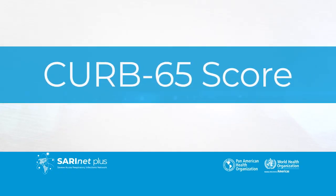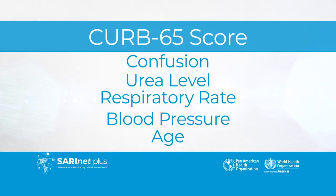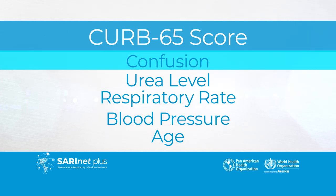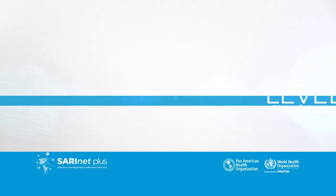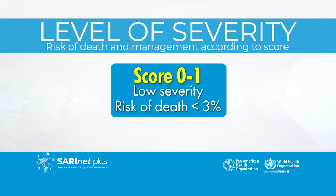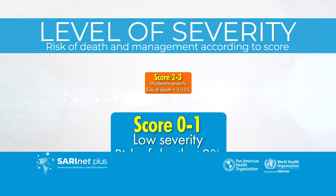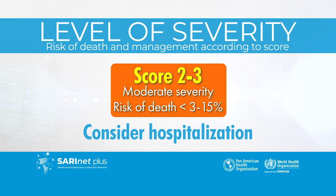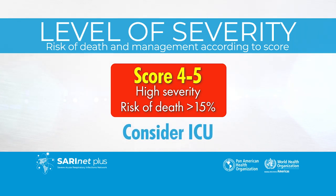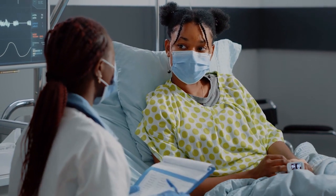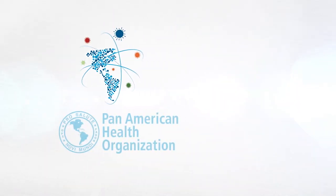In adults, the CURB-65 score is a validated tool that, when combined with clinical judgment, can be used to predict mortality and aid in determining admission for adult patients with pneumonia. It considers five simple variables easily available: confusion, urea level, respiratory rate, blood pressure, and age. A score of 0 to 1 predicts low risk and suggests considering home-based care. A score of 2 to 3 predicts moderate severity and suggests hospitalization. A score higher than 4 suggests the need for ICU admission. Adequate allocation improves the ability to monitor the patient and to provide the best care.